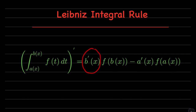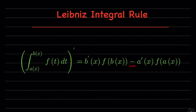It's b prime, which is the derivative of the upper bound, multiplied by the function f evaluated at the upper bound, minus the derivative of the lower bound, multiplied by the function evaluated at the lower bound. That's how you keep this formula in mind.